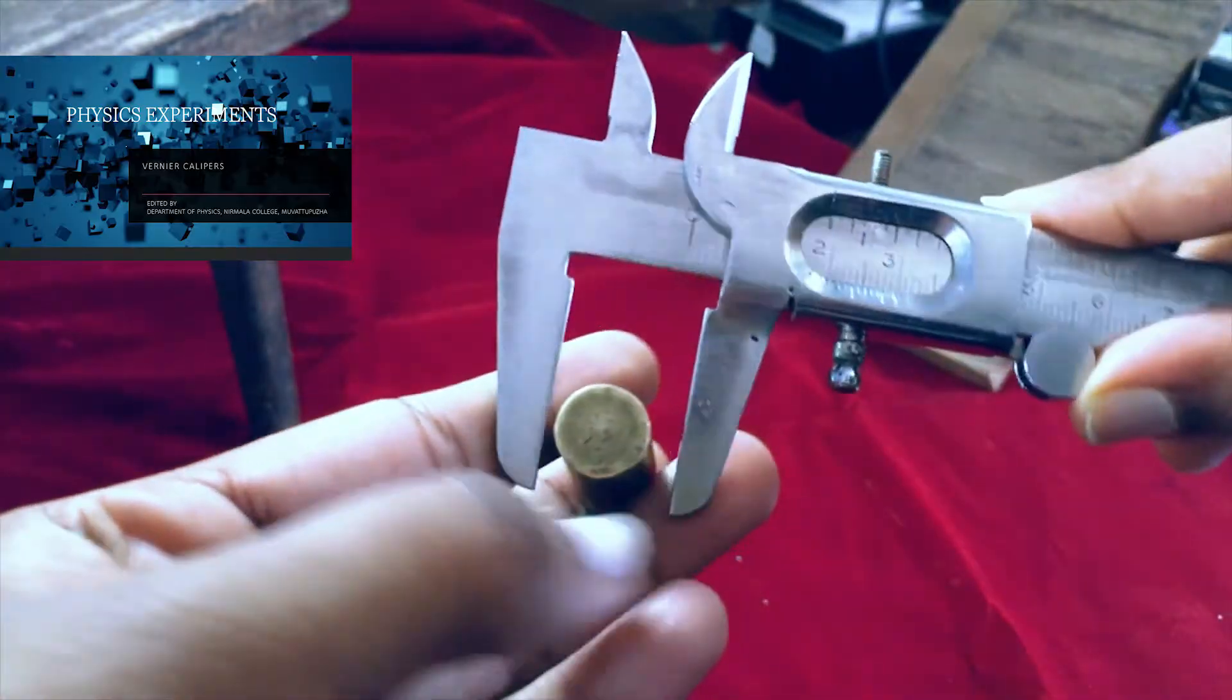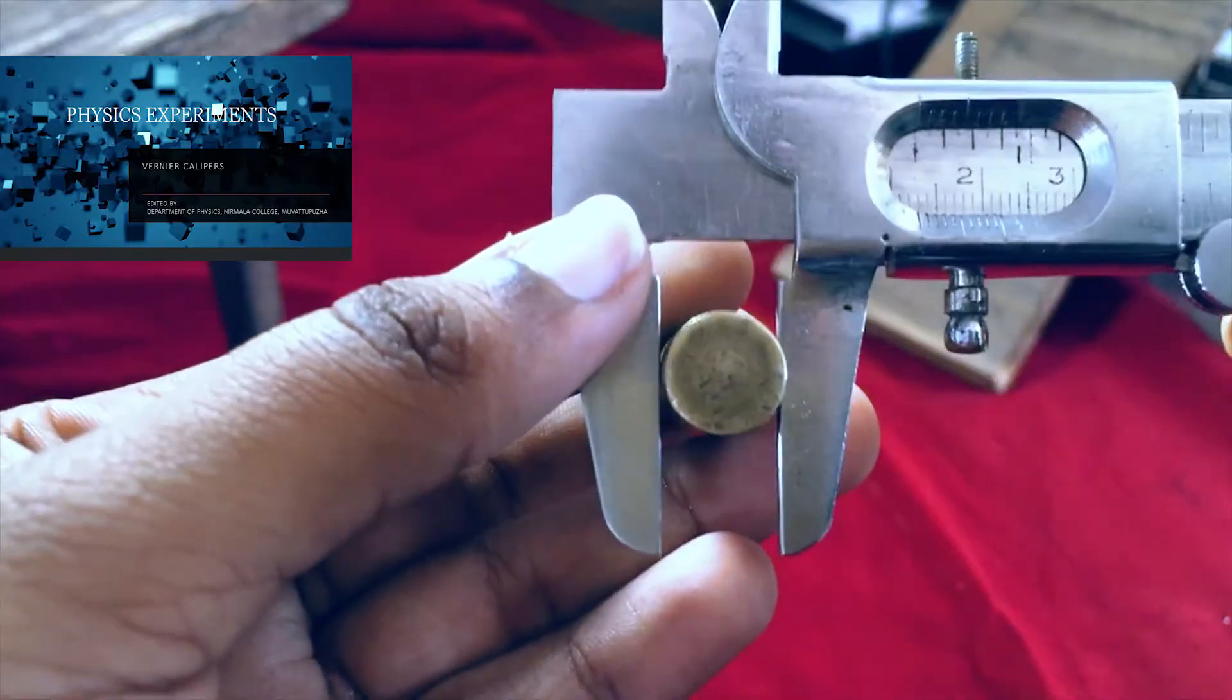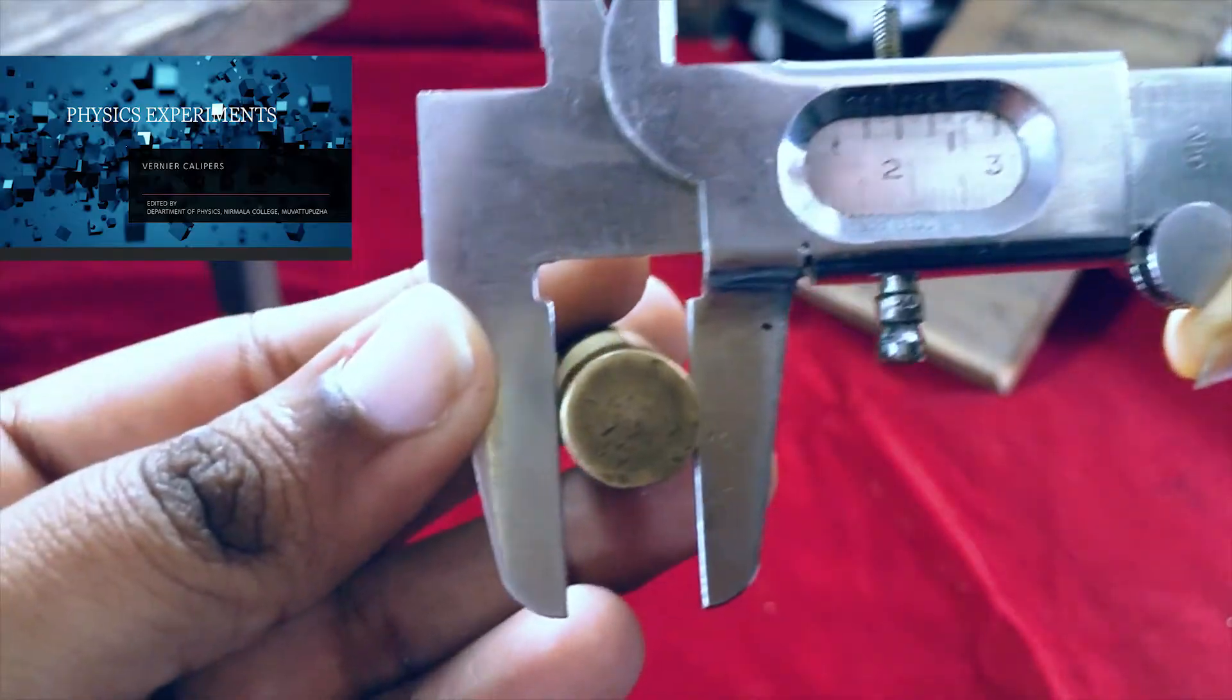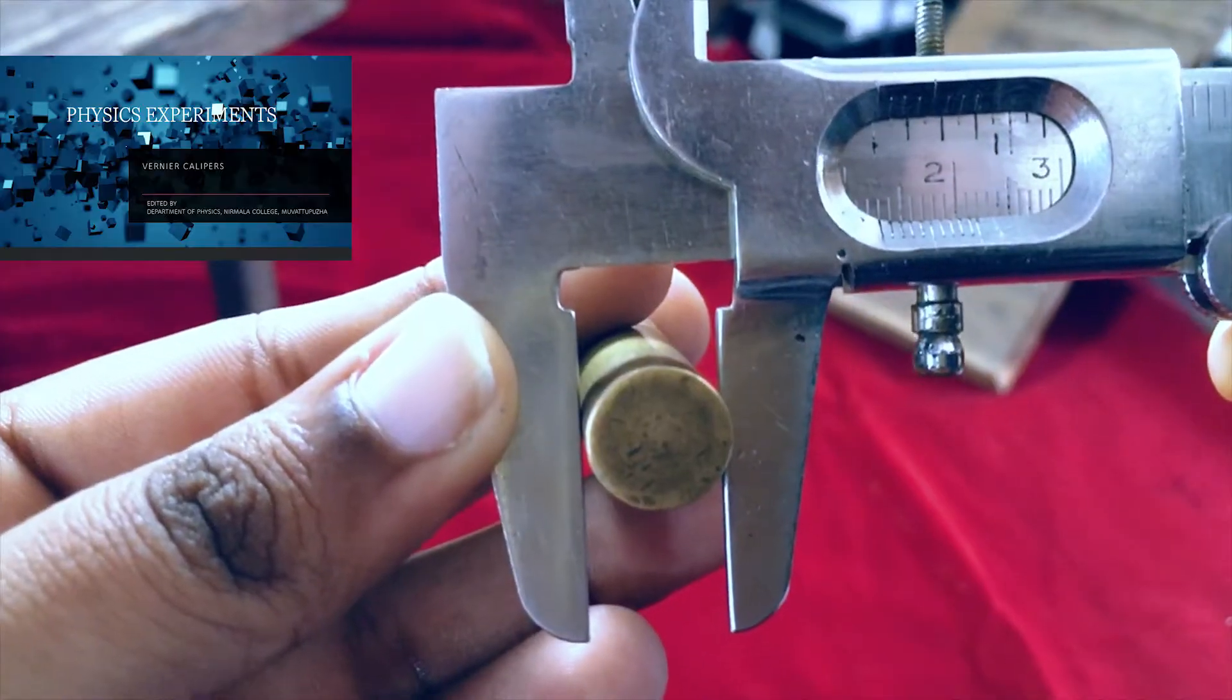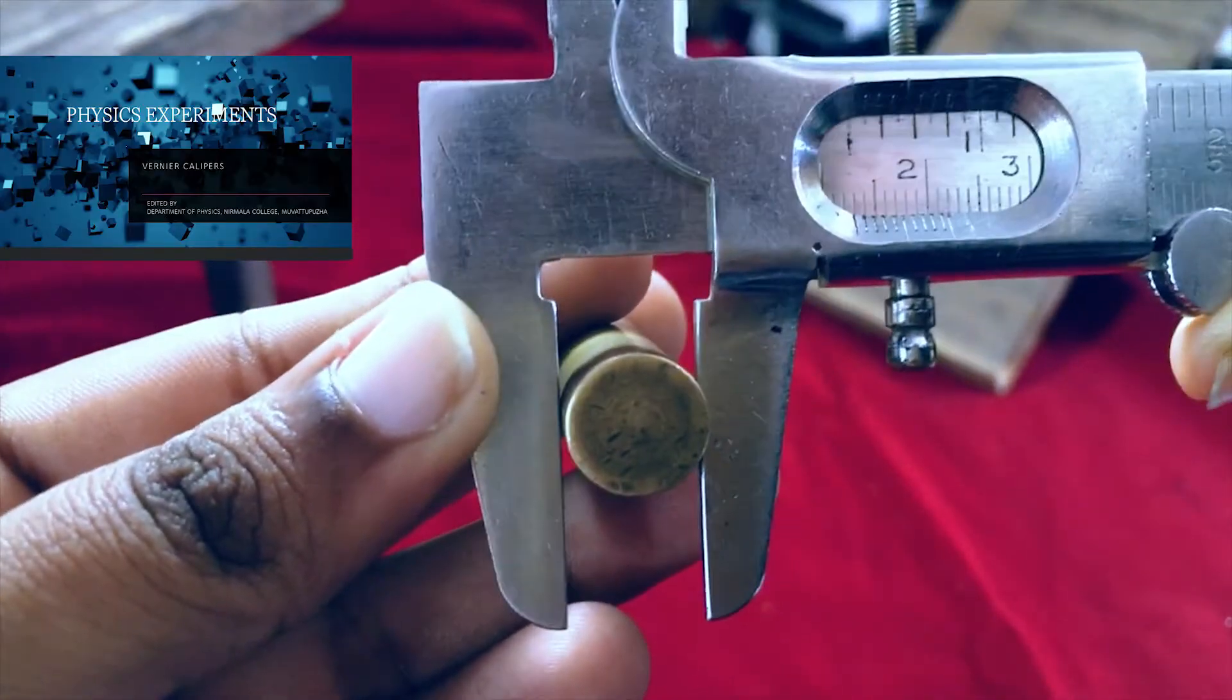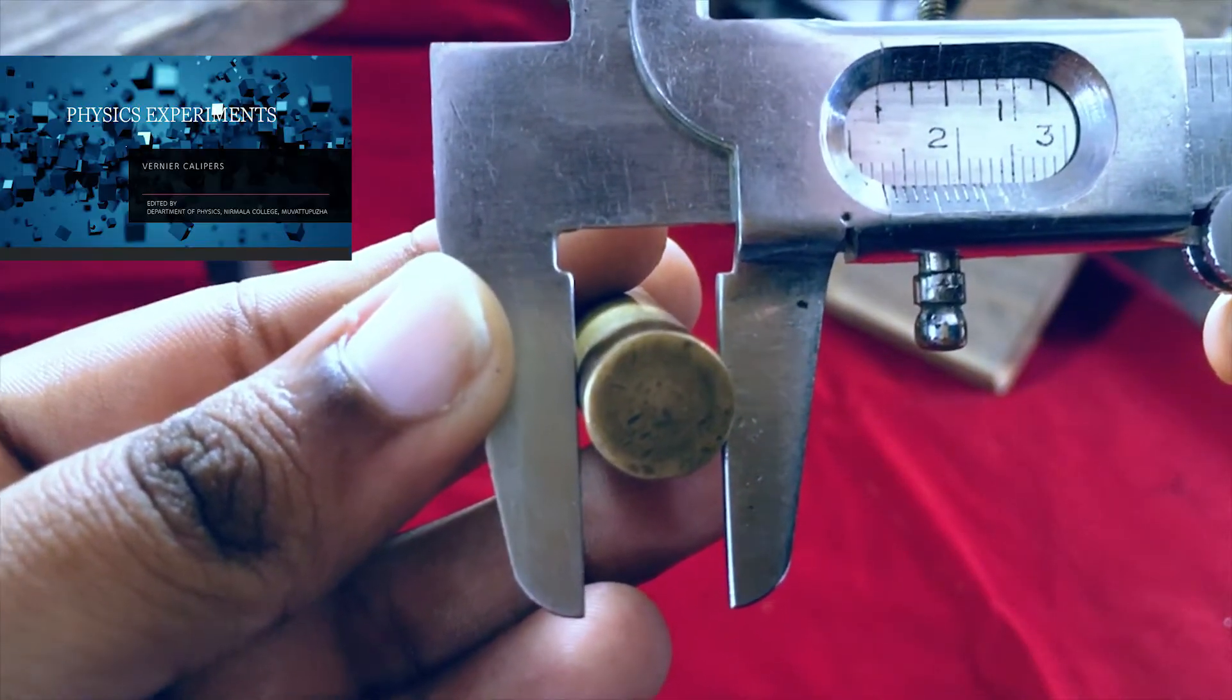First, we're going to find the diameter. We fix the cylinder in the two jaws. Then we take the reading. The reading is 1.3 and 1.2.